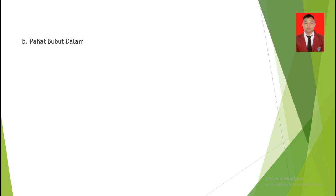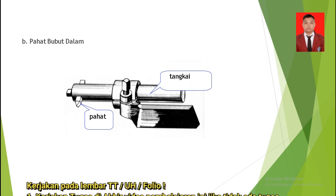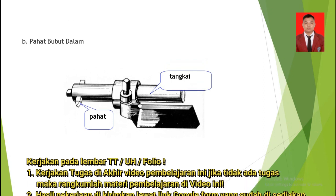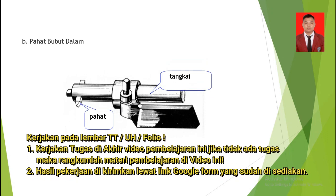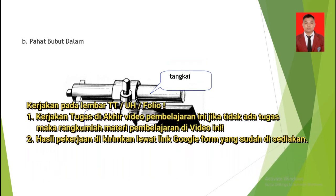Yang kedua atau yang B adalah pahat bubut dalam. Ini contoh gambar pahat bubut dalam; di sini ada tangkainya, tangkainya berfungsi sebagai tempat pahat bubut, selanjutnya pada tangkainya ini akan diikat pada toolpost.